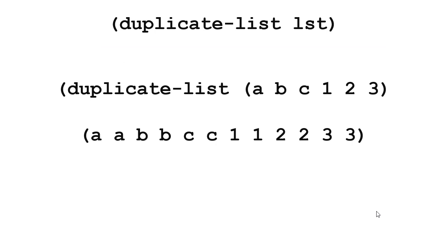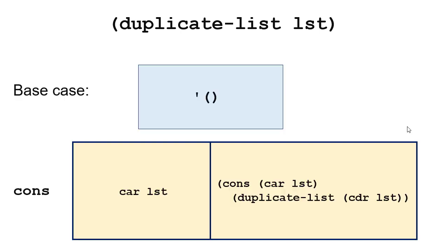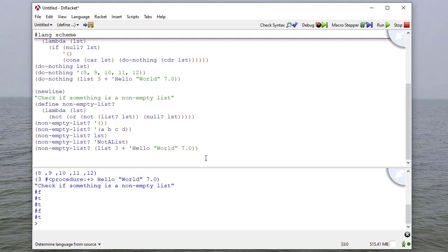Our next procedure is going to be called duplicate-list, and it's going to duplicate every element in the list. So given the list A, B, C, 1, 2, 3, we return A, A, B, B, C, C, 1, 1, 2, 2, 3, 3. The structure is similar: our base case is the null list, but when we combine, we cons the car of the list to a cons of the car of the list with the recursive call. So we're consing the car of the list back onto the result twice.